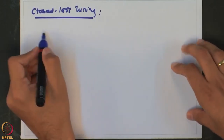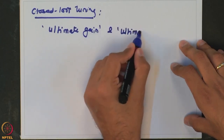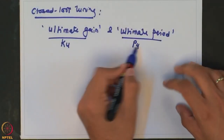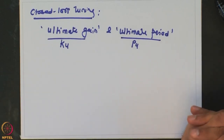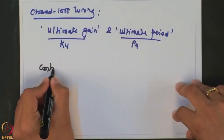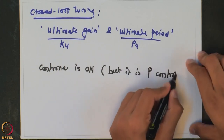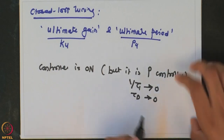In closed loop tuning, you are interested in obtaining the ultimate gain and ultimate period, represented as KU and PU. The controller is kept on, but it is set as a proportional-only controller — tau_i inverse is 0 and tau_d is also 0. Using only a proportional controller ensures the system remains stable, and you then keep increasing the gain of the controller.